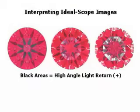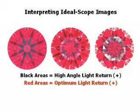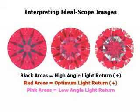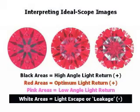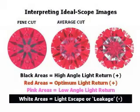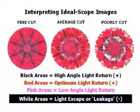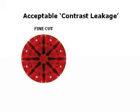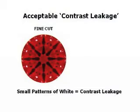Black areas indicate light returned at very high angles. These areas are dark in the Ideal Scope because light from directly above is blocked by the camera. Red areas indicate light returning to the eye at optimum angles. Pink indicates less optimum light return. White indicates non-reflecting facets where light is escaping or leaking out of the diamond's pavilion. The finest cut diamonds have an abundance of red and a pattern of symmetrical black arrows radiating from the center. Average cut diamonds have areas of pink, gray, and white leakage. Poorly cut diamonds have large areas of leakage and chaotic optical symmetry. Finely cut diamonds may have small triangular patterns of white along the edges and outside the center — these small areas of contrast leakage are perfectly acceptable.